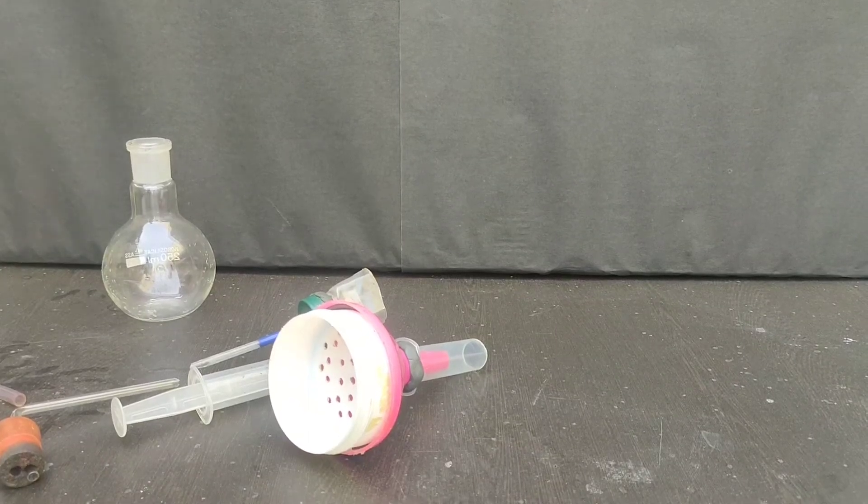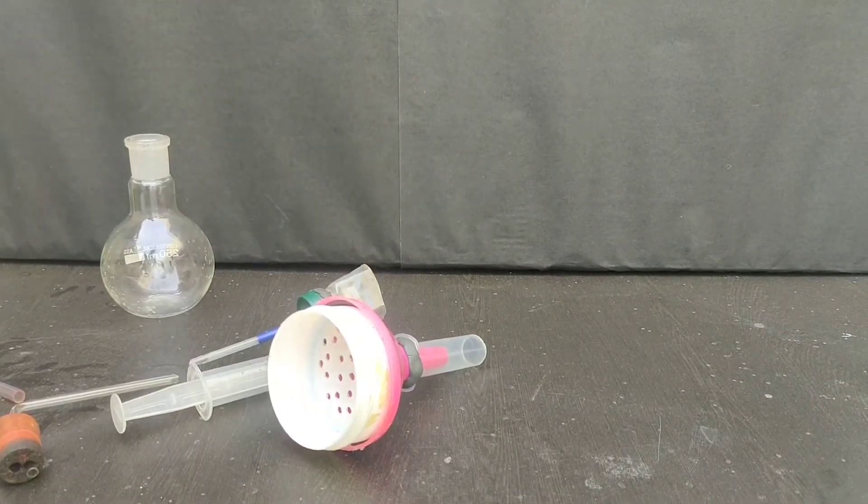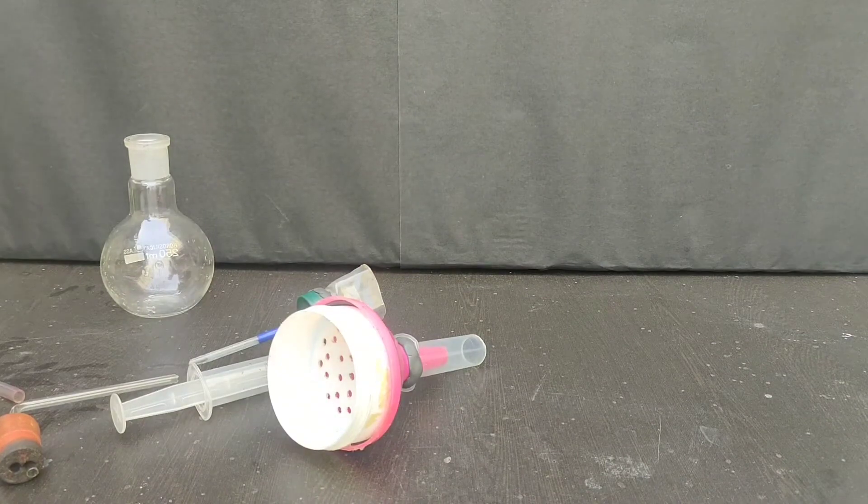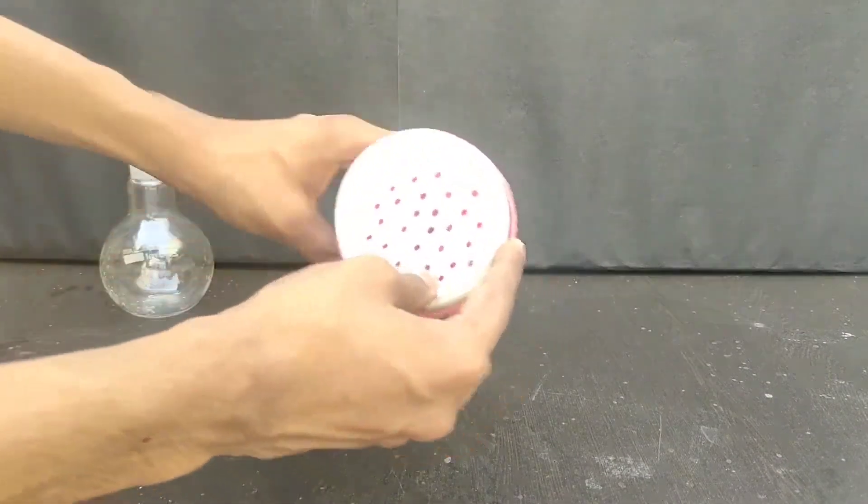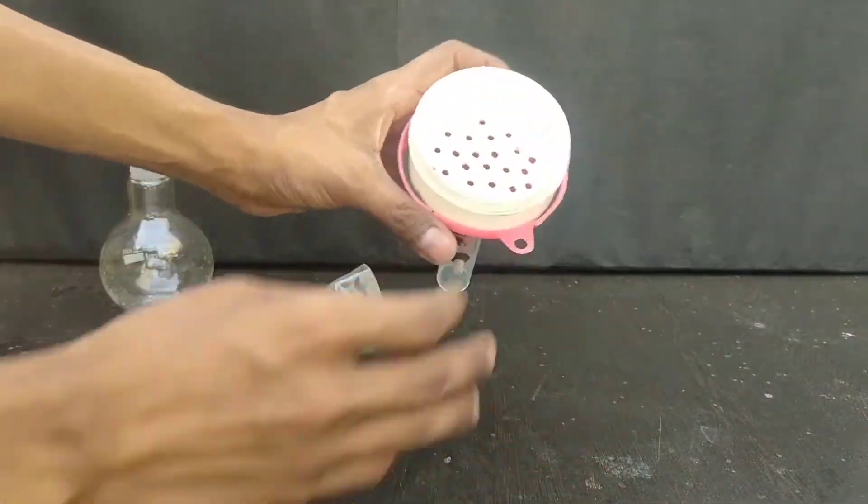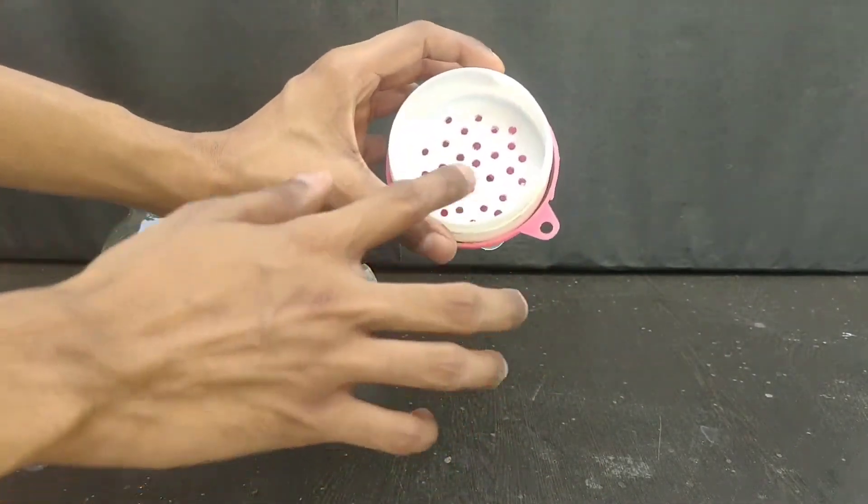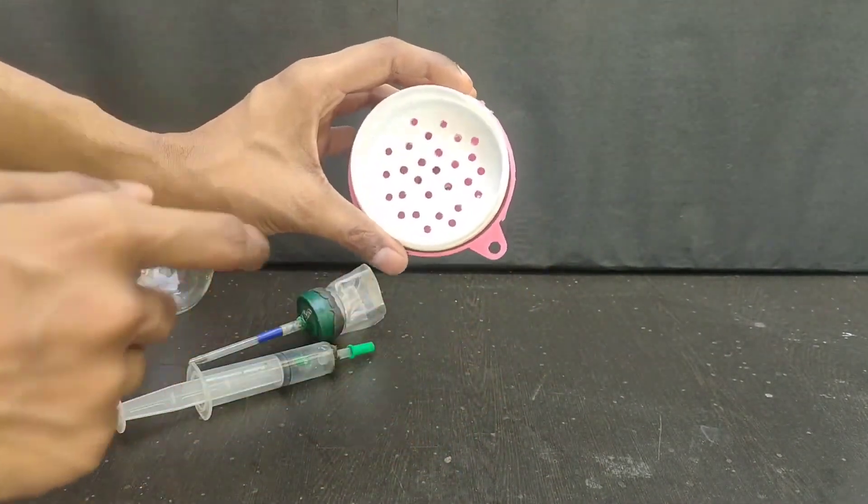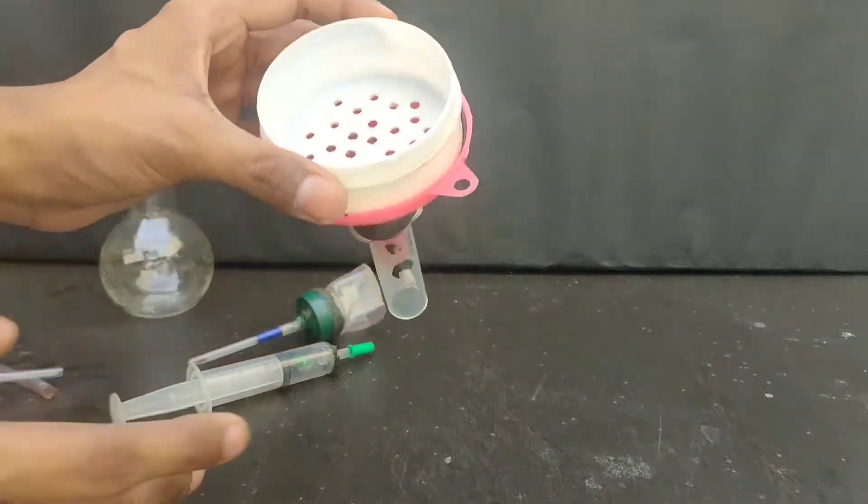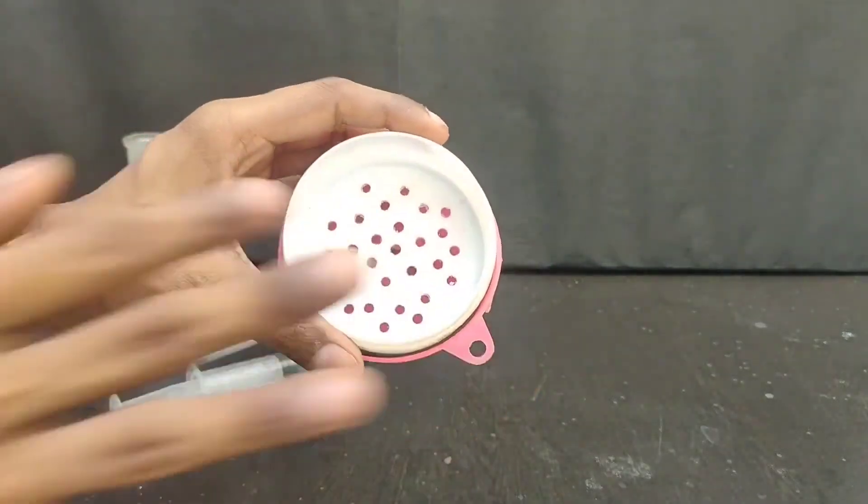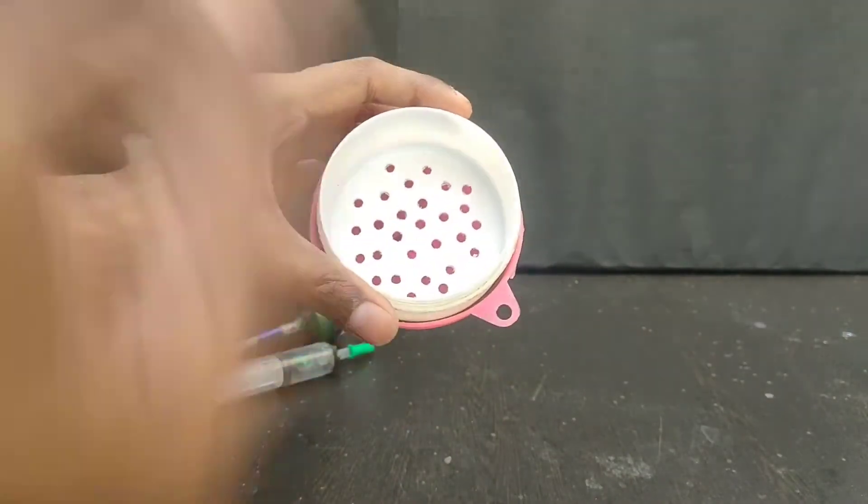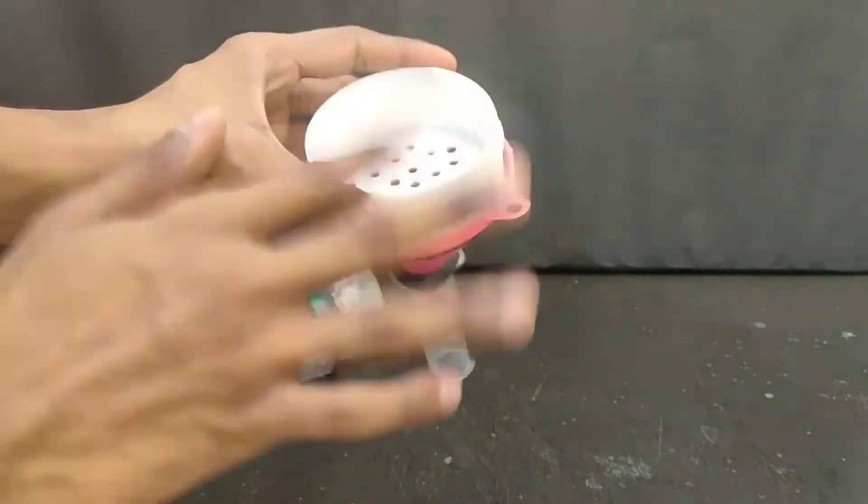In this video I will show you my DIY vacuum filtration equipment that I have made myself. This is a Buchner funnel. What I did is I took an empty cream container and made holes inside with the help of a hot iron nail. Then I sanded the inner surface to make the surface smooth.